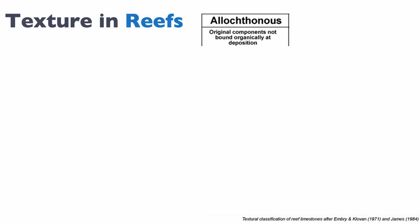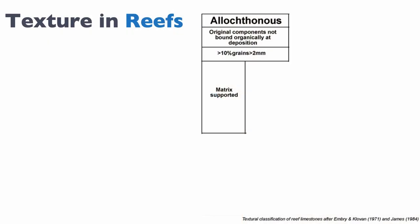The first question in this classification is whether you're looking at an originally bound-together component or a loose, allochthonous sediment. If it is an allochthonous sediment, the next question is: do you have more than 10% of grains that are larger than two millimeters? This two-millimeter limit is arbitrary but important. If you don't have more than 10% of grains larger than two millimeters, you cannot use this classification. If you do, the next question is whether you are matrix-supported or grain-supported.